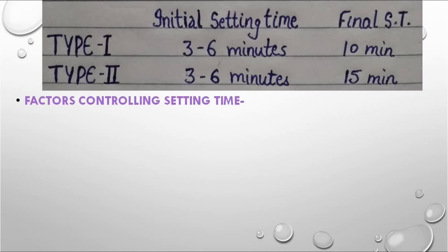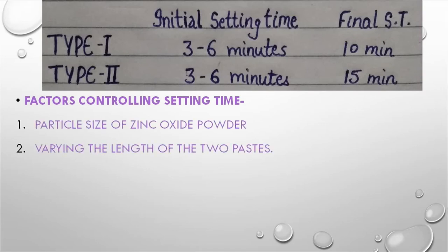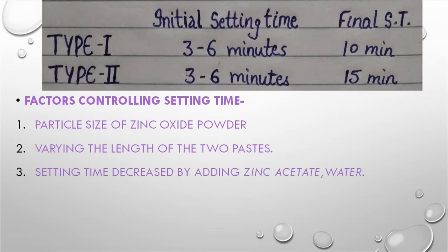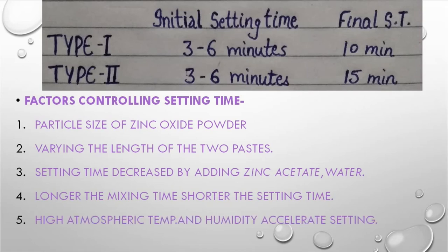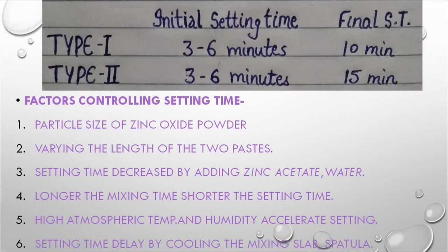Factors controlling setting time of ZOE: particle size of zinc oxide; varying the length of paste; setting is decreased by adding zinc acetate and water; longer the mixing time, shorter the setting time; increased atmospheric temperature and humidity accelerate setting. Therefore, in summer, the glass slab is cooled in the refrigerator before mixing.